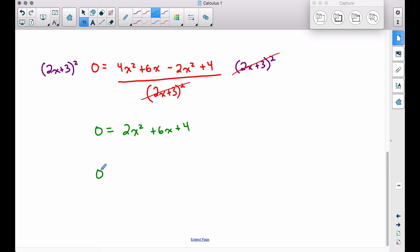So zero divided by two gives us zero, two divided by two, we get an x squared, dividing this by two we get 3x, and dividing this by two we get two.